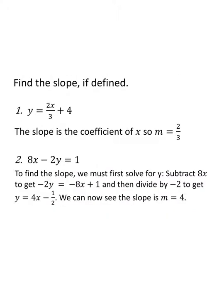Now suppose we're given some equations and we want to find the slope. Remember y equals mx plus b — m is the slope, m is the coefficient of x, as long as y is by itself. So for y equals two x over three, the slope is two thirds — not just two, because two is divided by three.